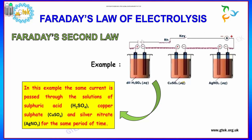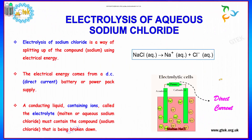Now, showing similar electricity passed through different electrolytes and electrodes. For electrolysis of aqueous sodium chloride, the compound sodium chloride is split using electrical energy. The electrical energy comes from a DC power source. A conducting liquid containing ions is called an electrolyte, which contains sodium chloride.